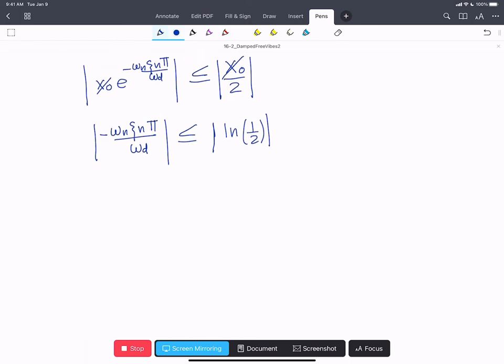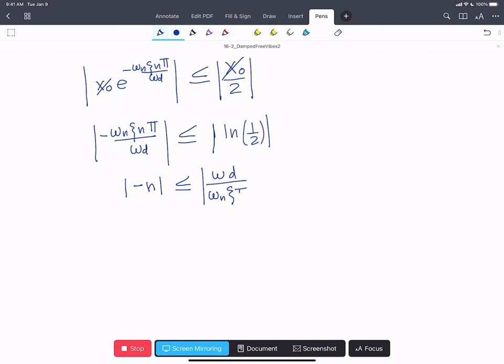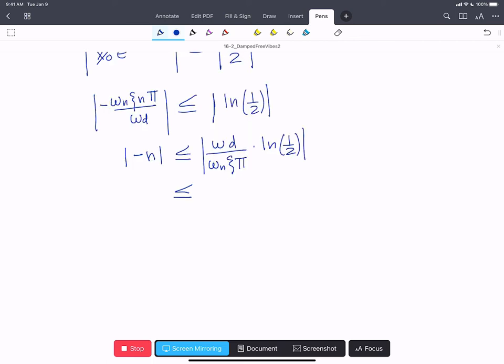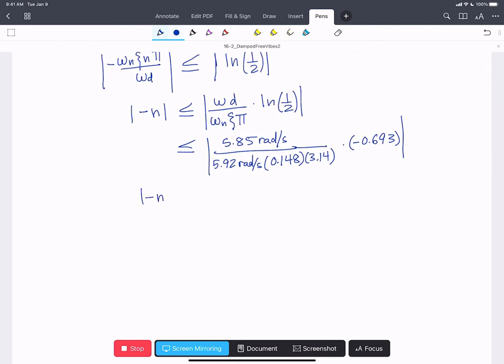And we want to solve for n, so we end up with the magnitude of negative n is less than or equal to the magnitude of omega d over omega n zeta pi times ln of one half. Magnitude of negative n is less than 5.85 rads per second over 5.92 rads per second times 0.148 times 3.14 all times minus 0.693. That's our ln of one half. And we get that minus n less than negative 1.474.